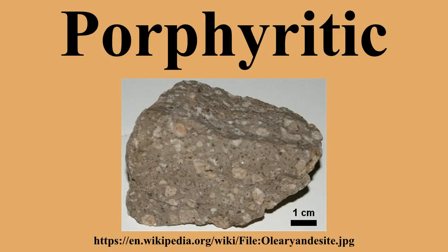Porphyritic rocks are formed when a column of rising magma is cooled in two stages. In the first stage, the magma is cooled slowly deep in the crust, creating the large crystal grains with a diameter of two millimeters or more. In the final stage, the magma is cooled rapidly at relatively shallow depth or as it erupts from a volcano, creating small grains that are usually invisible to the unaided eye.